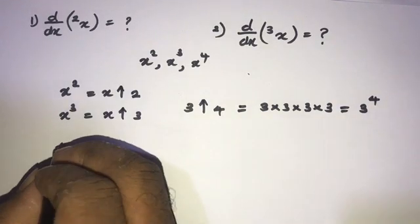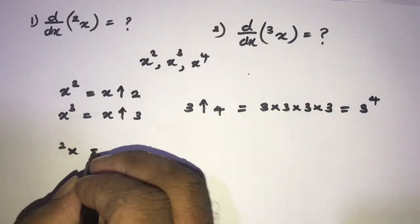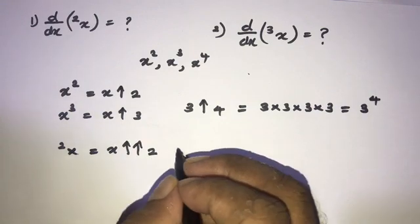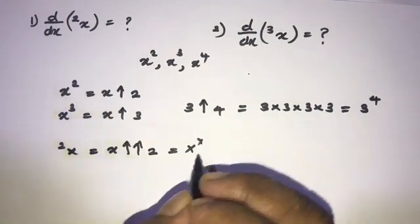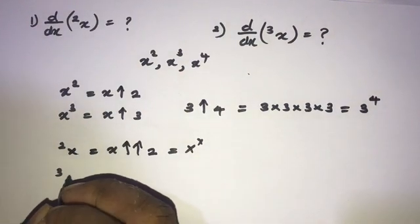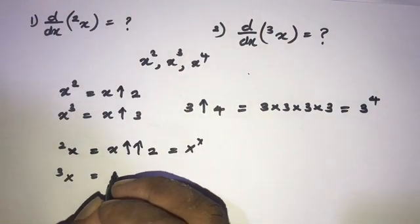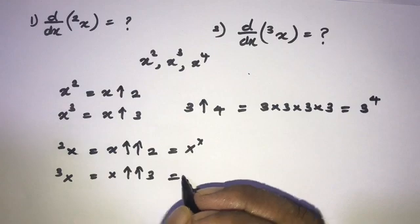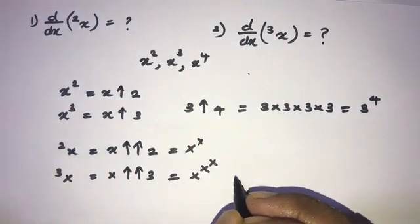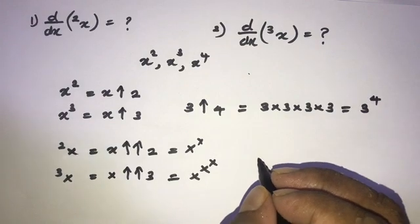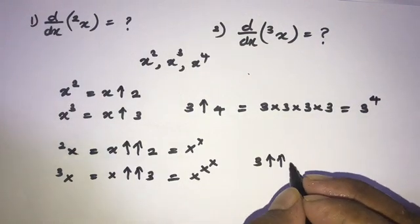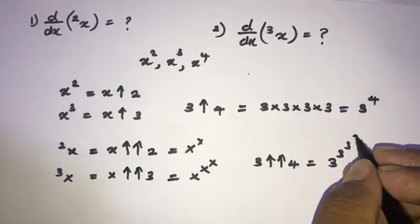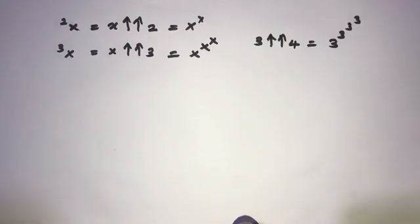If we get x to the superpower of 2, we write this as x double up arrow 2, and this is equal to x to the x power. Likewise, x to the superpower of 3 is written as x double up arrow 3, which equals x to the x to the x power. For example, 3 double up arrow 4 is equal to 3 to the 3 to the 3 to the 3 power.